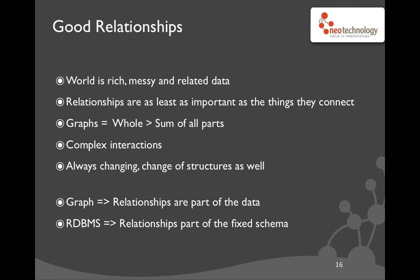Graphs and connections show complex interactions in the world — it's not just a static graph, but always changing. You have transport of information along relationships and constant change. In a graph database, relationships are part of the data. Whenever you want to change a relationship — add one, remove one, or add millions — you can do it easily. In a relational database, relationships are part of the fixed schema and you need foreign key constraints to ensure data integrity. In a graph database, it's always assured that you have both ends of a relationship — no dangling references.